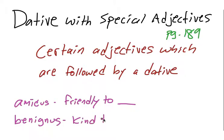You could have the adjective carus which means dear, so you can be dear to someone and that someone would be in the dative. Those are just a few examples.